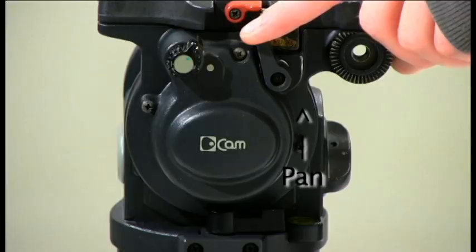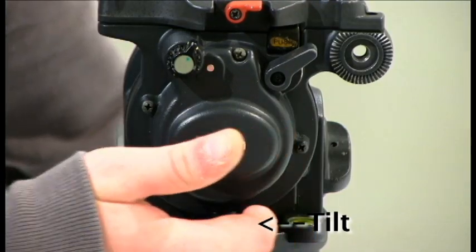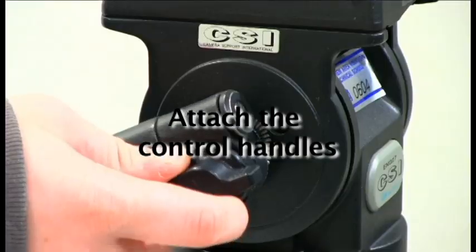Step number 5. Next lock the pan and tilt levers and attach the control handles on both sides of the tripod head.